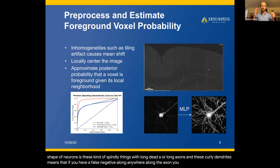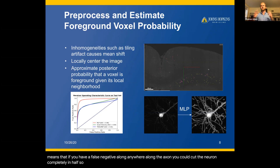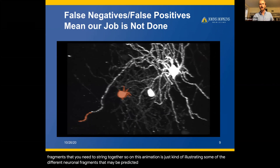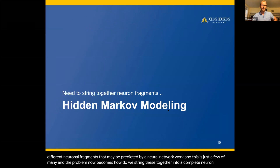The existence of these false negatives means you're going to have a lot of fragments that you need to string together. This animation illustrates some of the different neuronal fragments that may be predicted by a neural network — and this is just a few of many. The problem now becomes: how do we string these together into a complete neuron? For that problem, we turn to hidden Markov modeling.